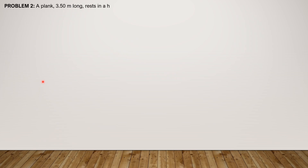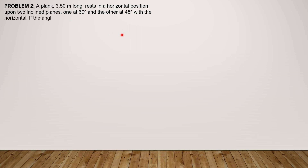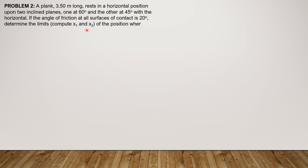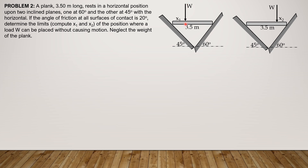For the second example: a plank 3.5 meters long rests horizontally on two inclined planes, one at 60 degrees and the other at 45 degrees with the horizontal. If the angle of friction at all surfaces is 20 degrees, determine the limits x₁ and x₂ — as indicated in the figure — of the position where a load W can be placed without causing motion. Neglect the weight of the plank.